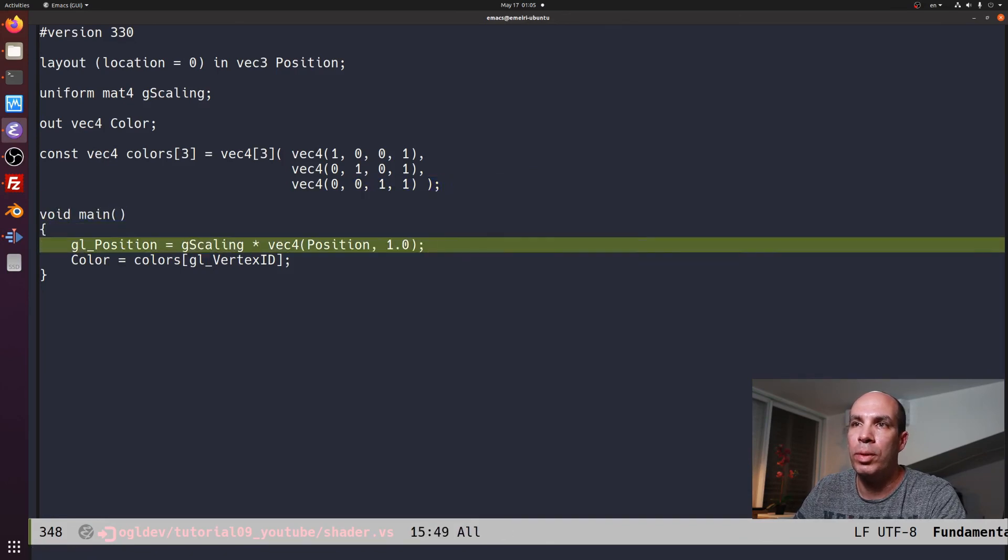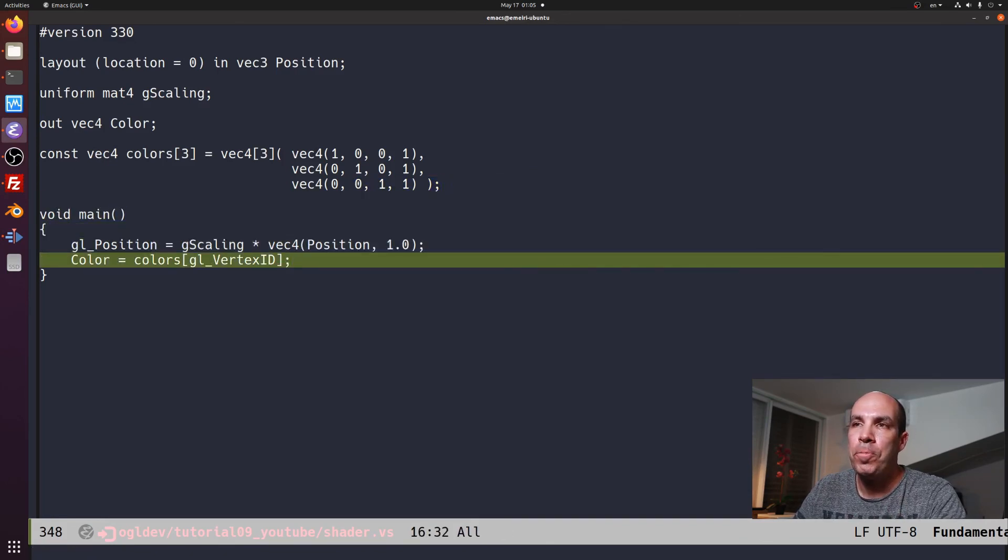So we index into the colors array here, and for the first vertex we'll take the color of red, and then green, and then blue. Okay, so the vertex shader will be called three times. We will provide or output a different color for each vertex, and then by the time it gets to the fragment shader, it will already be interpolated across the triangle face.